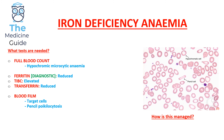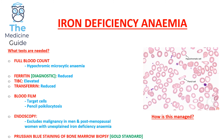Endoscopy should be considered to exclude malignancy in men and postmenopausal women presenting with unexplained iron deficiency anaemia, as this may indicate colorectal cancer. Prussian blue staining of a bone marrow biopsy is the gold standard. Management involves initially offering oral ferrous sulphate, and if unsuccessful, considering IV iron replacement.